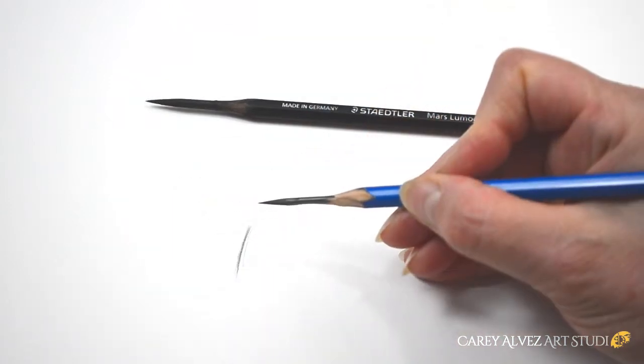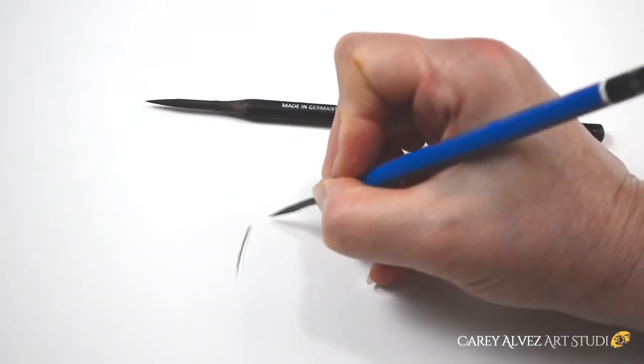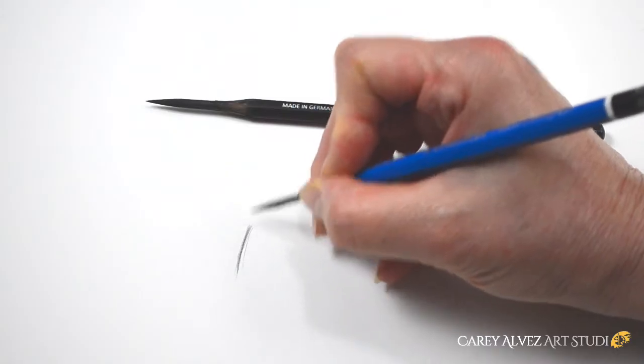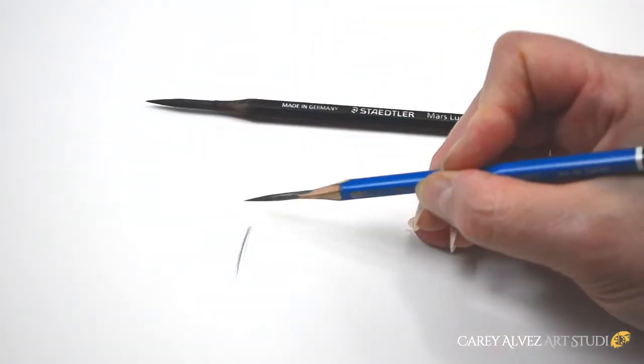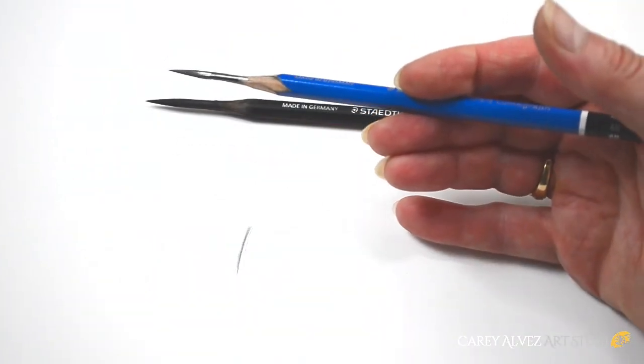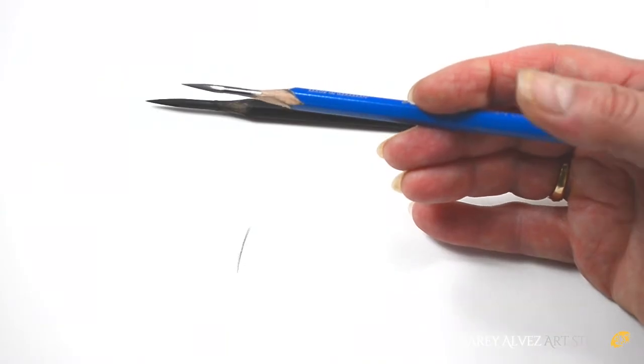But when we have our pencil sharpened this way, first of all, you can't even hold it like that. You physically can't do it. You're too close to the lead and it's physically impossible to do it. And so you are forced by default to hold the pencil further back, which is actually the way you should be holding it when you're drawing. This is the better way to draw for a whole host of reasons.